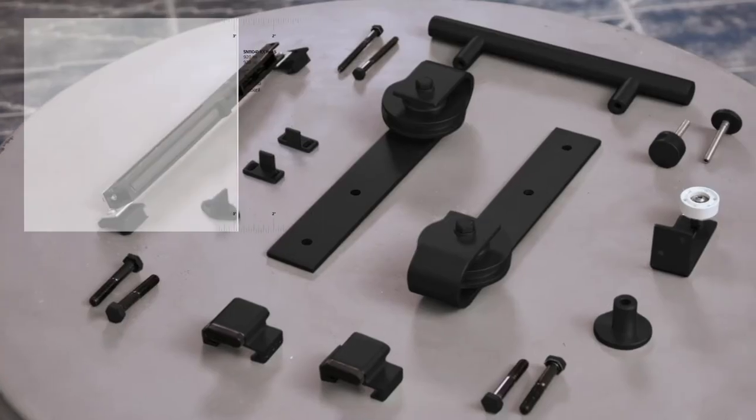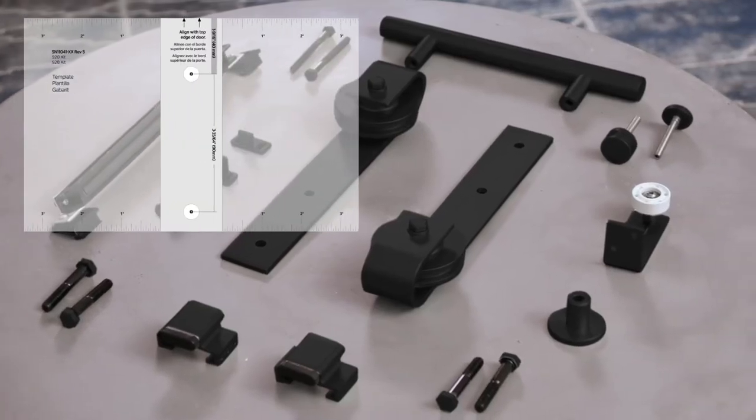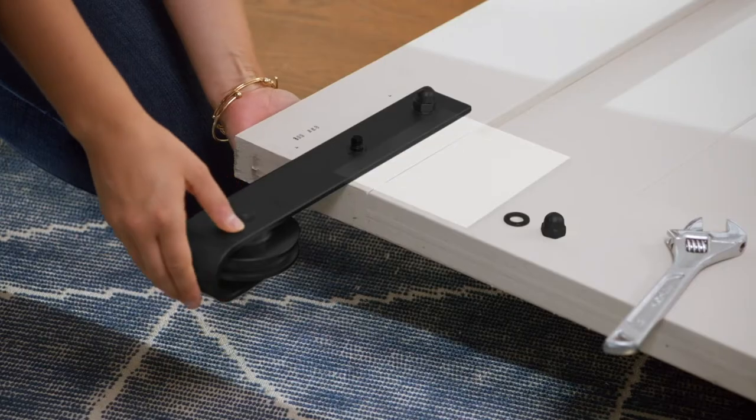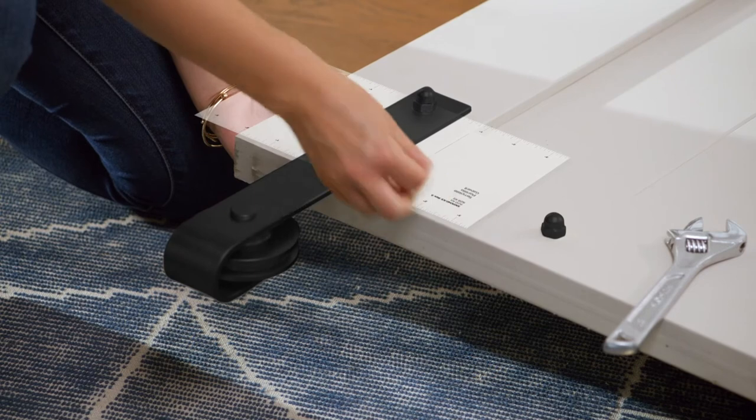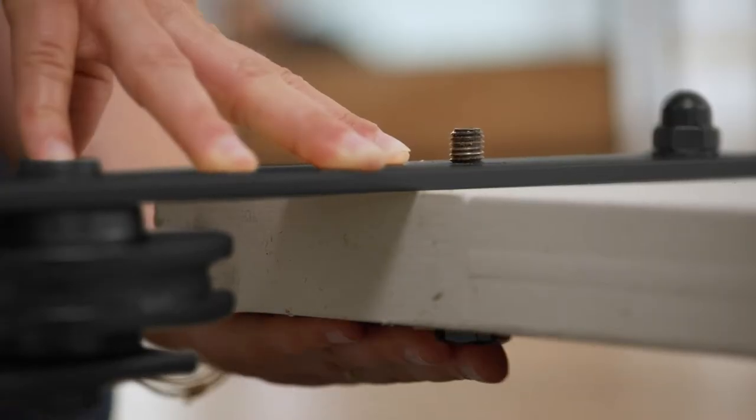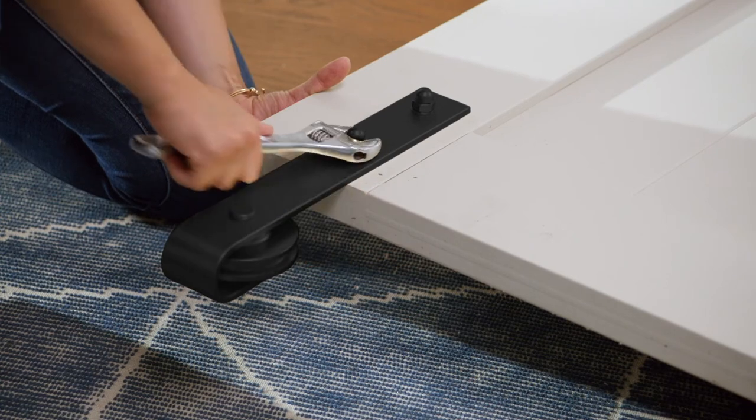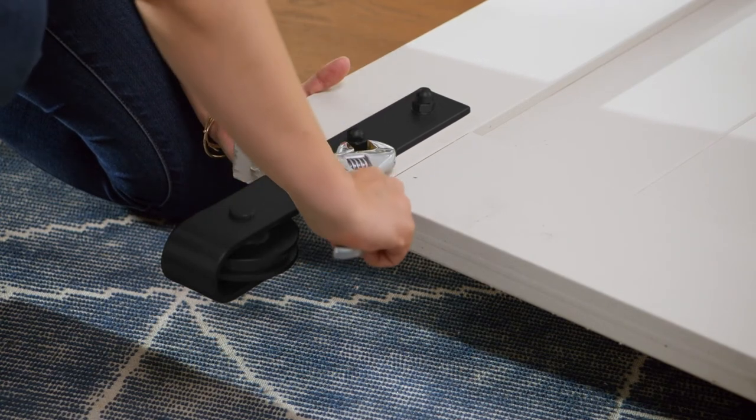Now we'll prepare the door. To install the hangers, position the supplied template on the front of the door and align with the top edge. Make sure the template is two inches and parallel to the door edge. Mark the holes in the template and repeat on the other end of the door. Drill the marked holes through the door and install the hangers. Do not over tighten.